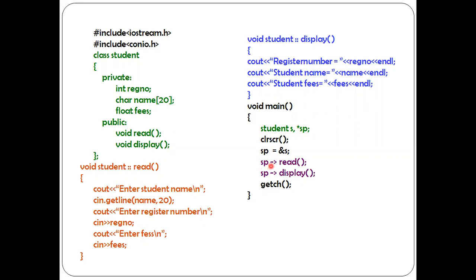In the next line, sp arrow read calls the read member function. Previously we used the dot operator to access member functions, but here since sp is a pointer object, we use the arrow operator — this is called the arrow operator — to access the read and display member functions.